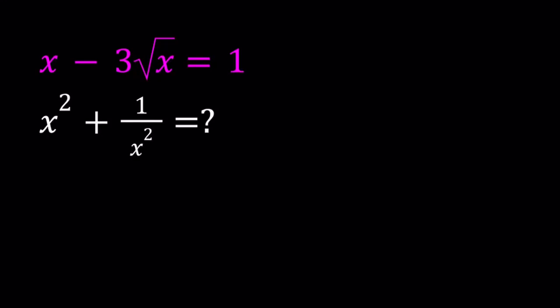Hello everyone. In this video, we're going to be dealing with a radical expression. We are given x minus 3 times the square root of x equals 1, and we're supposed to evaluate x squared plus 1 over x squared. In this case, we want x to be a real number, so we're going to be paying attention to that, and I'll be presenting two methods. Let's start with the first one.